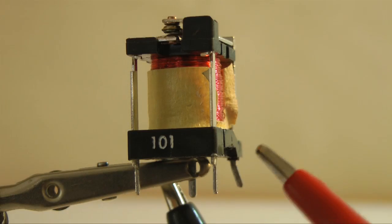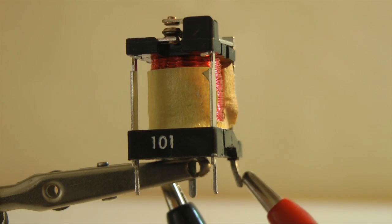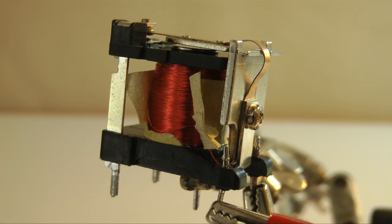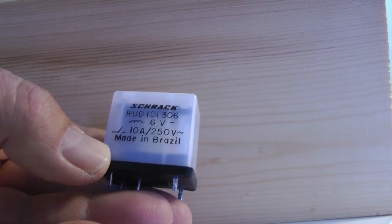When I connect 6 volts to the coil on this relay, you can see the contacts closing. The specs for this relay state that it can control up to 10 amps at 250 volts AC.